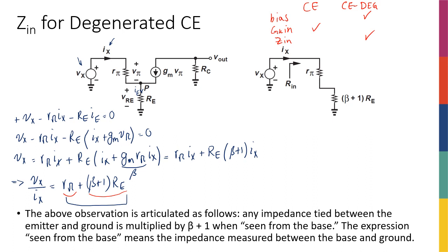I'm making these comparisons to summarize what we've discussed and organize our thoughts on how these two stages compare. You might wonder why we bother with the degenerated stage when it has much smaller gain. The reasons are: it gives better, more practical and less sensitive biasing, and it has a higher input impedance, which can compensate for the smaller gain since low input impedance can heavily attenuate your effective overall gain.